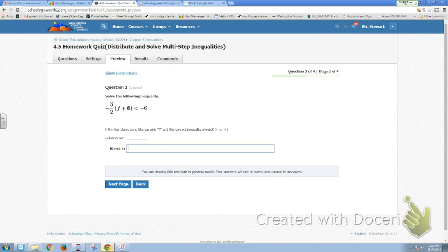Alright, so again, solve for the inequality. We would recommend that you distribute first, but you could also, so this could be distributed here and here, or you could undo this multiplication of a negative 3 halves by dividing both sides by negative 3 halves first. Again, I don't want to confuse people.